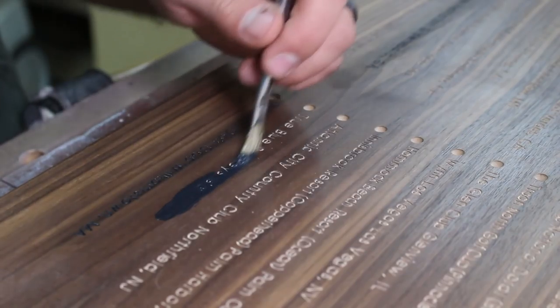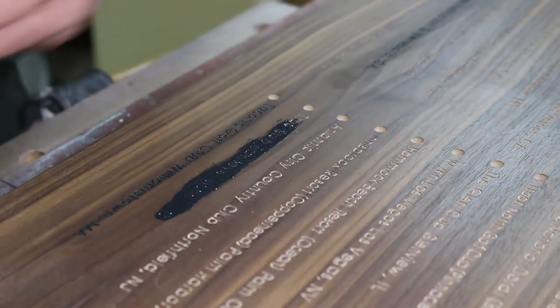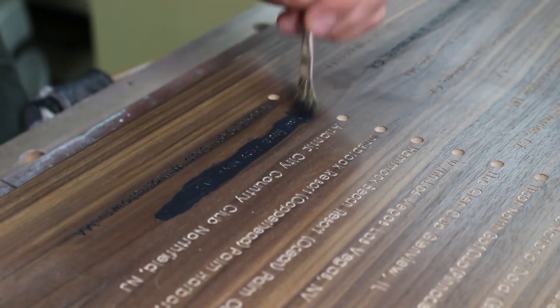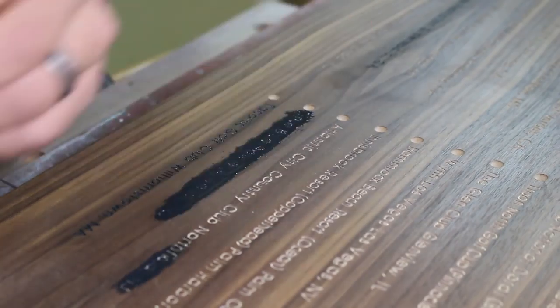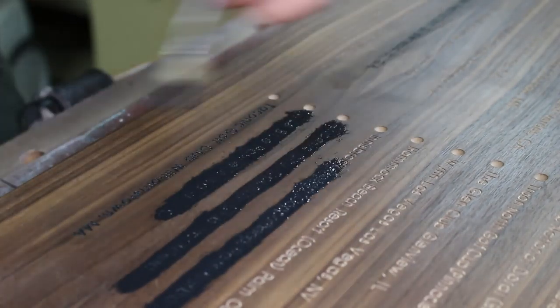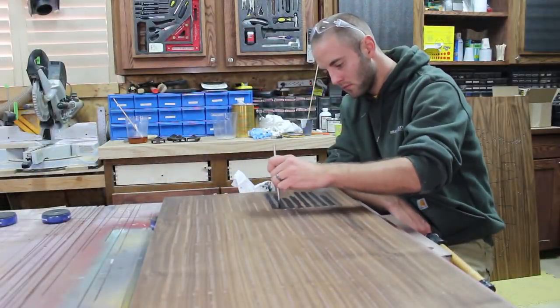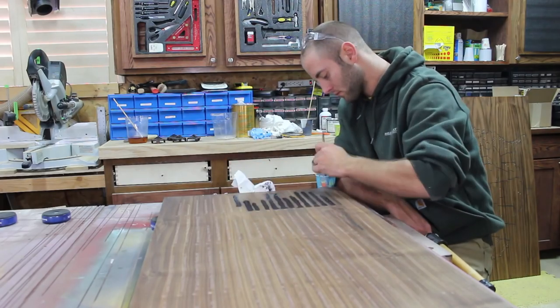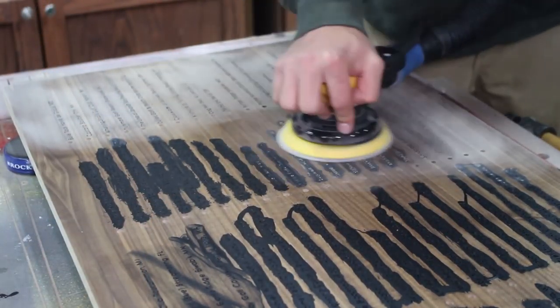To apply the black paint to the engraved letters, I used a small brush. This was much faster and didn't have any effect on the walnut as I had pre-finished it. Just like before, I sanded off the excess paint and applied a few more coats of lacquer.